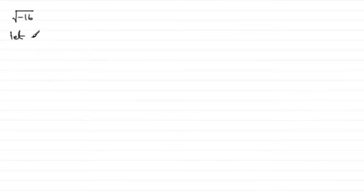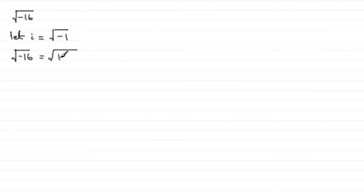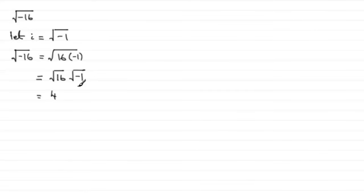But we can have a workaround on this. Suppose we let i equal the square root of minus 1. You might find some authors use the letter j instead of i, but I'm going to use i throughout my tutorials. So if we let i equal the square root of minus 1, then when it comes to working out the square root of minus 16, we can think of this as the square root of 16 multiplied by the square root of minus 1. The square root of 16 is 4, and the root of minus 1 has been defined as i, so we've got 4i.